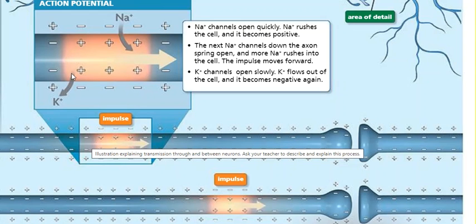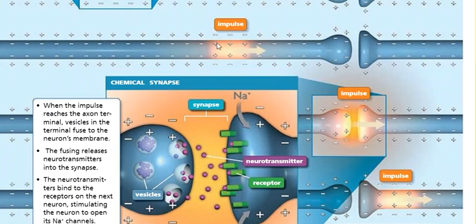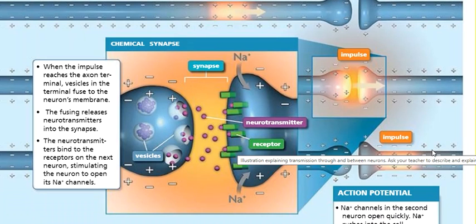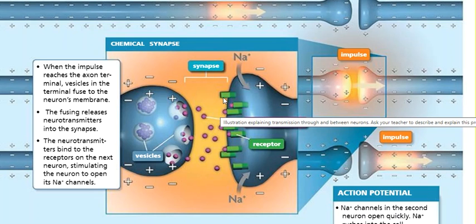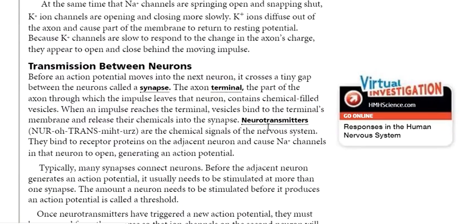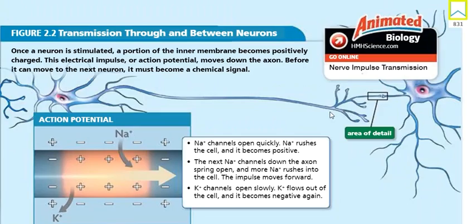The impulse keeps moving until it reaches the synapse — where the terminal of the axon meets the dendrites of the next nerve cell. When we say the impulse, it is translated into something called neurotransmitters. Neurotransmitters are the chemical form of the impulse — they are the chemical signals of the nervous system.